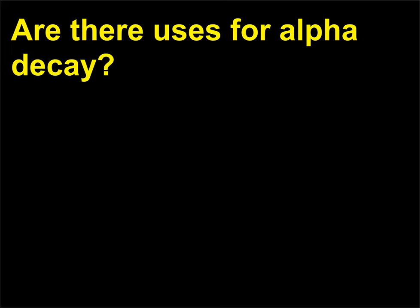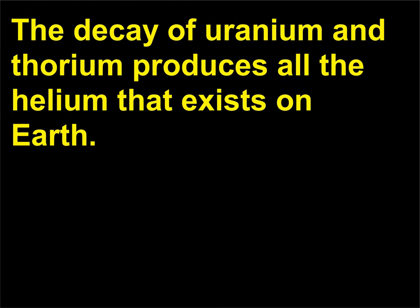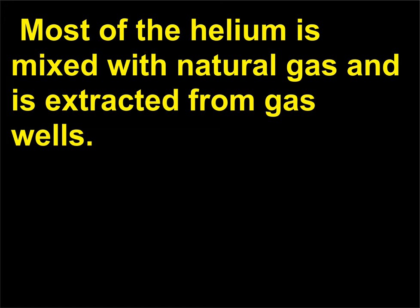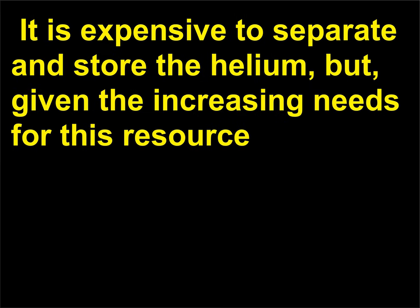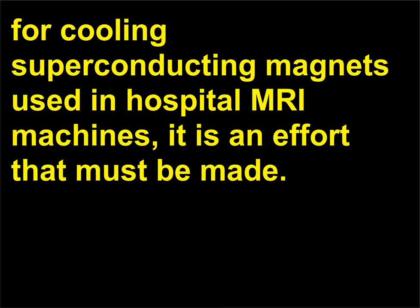Are there uses for alpha decay? The decay of uranium and thorium produces all the helium that exists on Earth. Most of the helium is mixed with natural gas and is extracted from gas wells. It is expensive to separate and store the helium, but given the increasing needs for this resource — for cooling superconducting magnets used in hospital MRI machines — it is an effort that must be made.